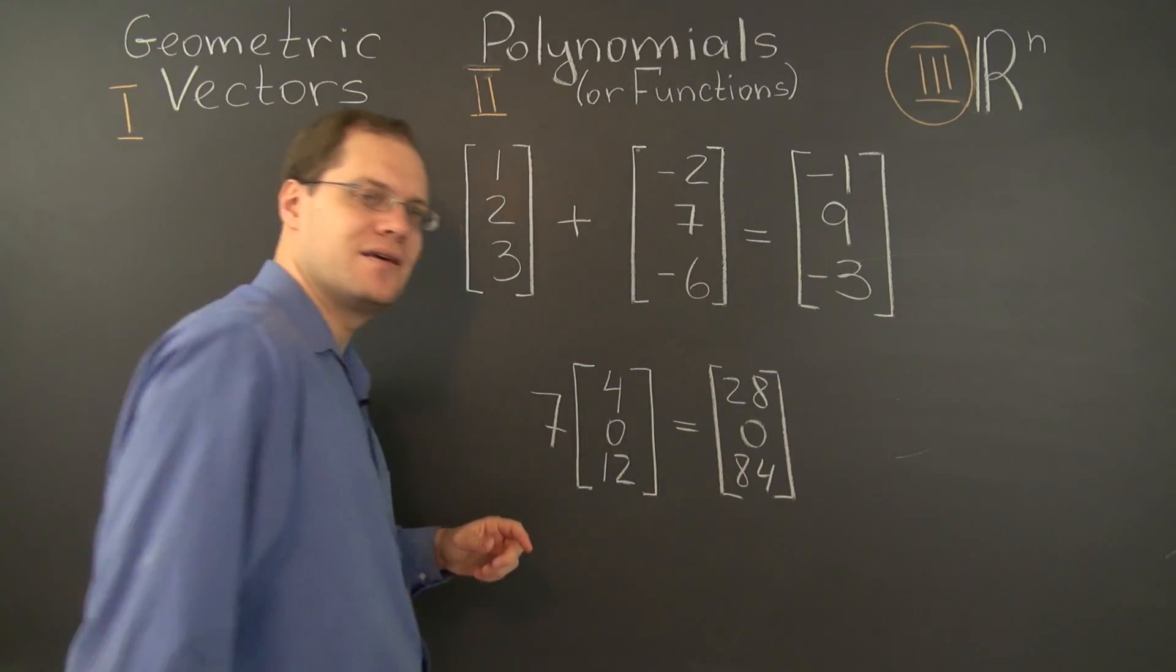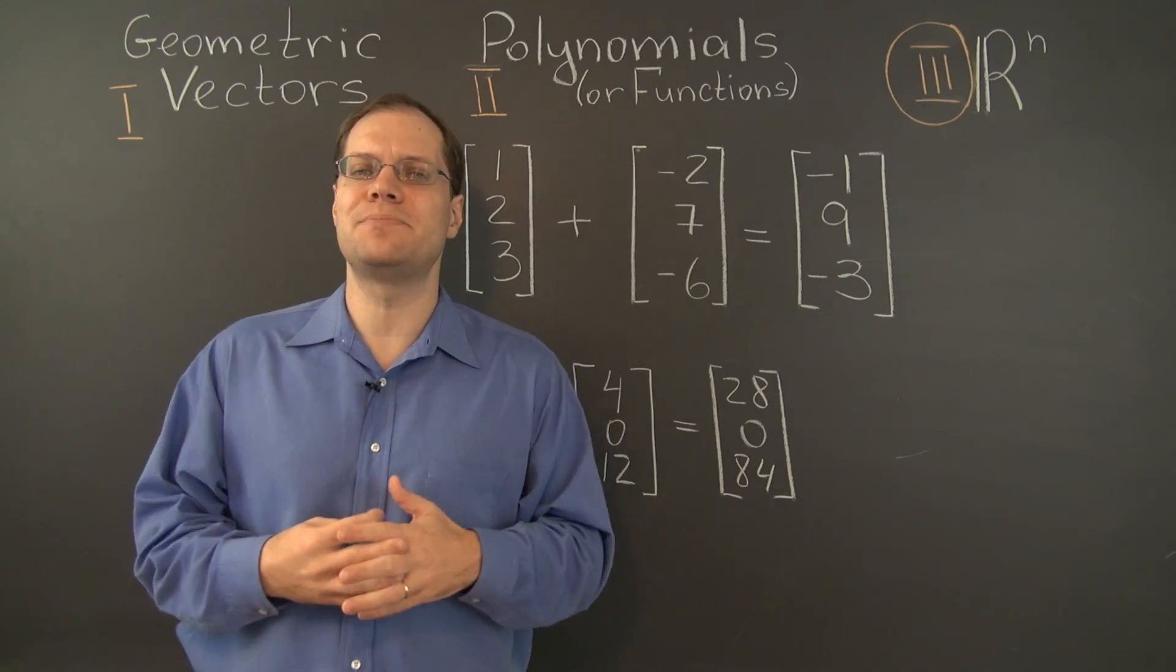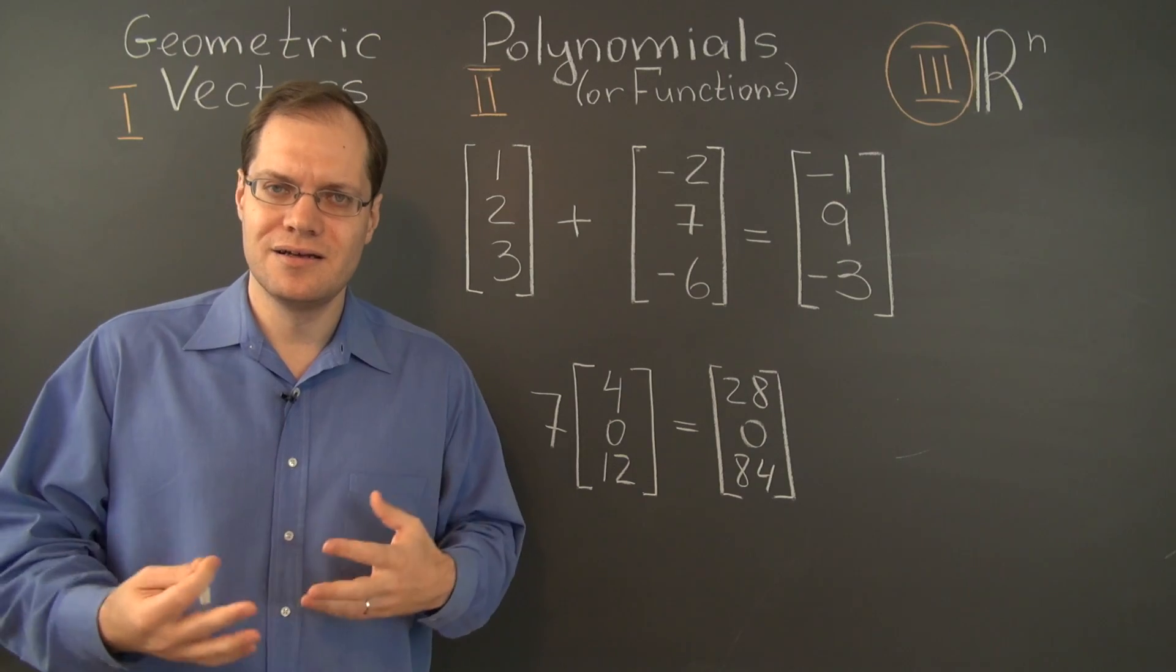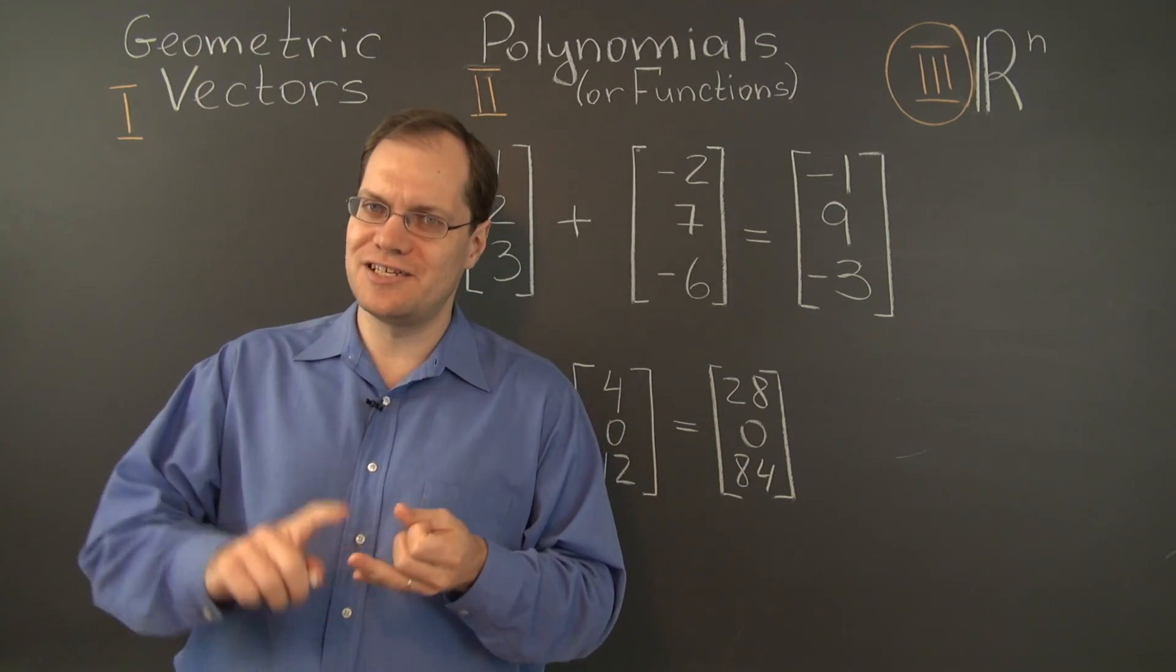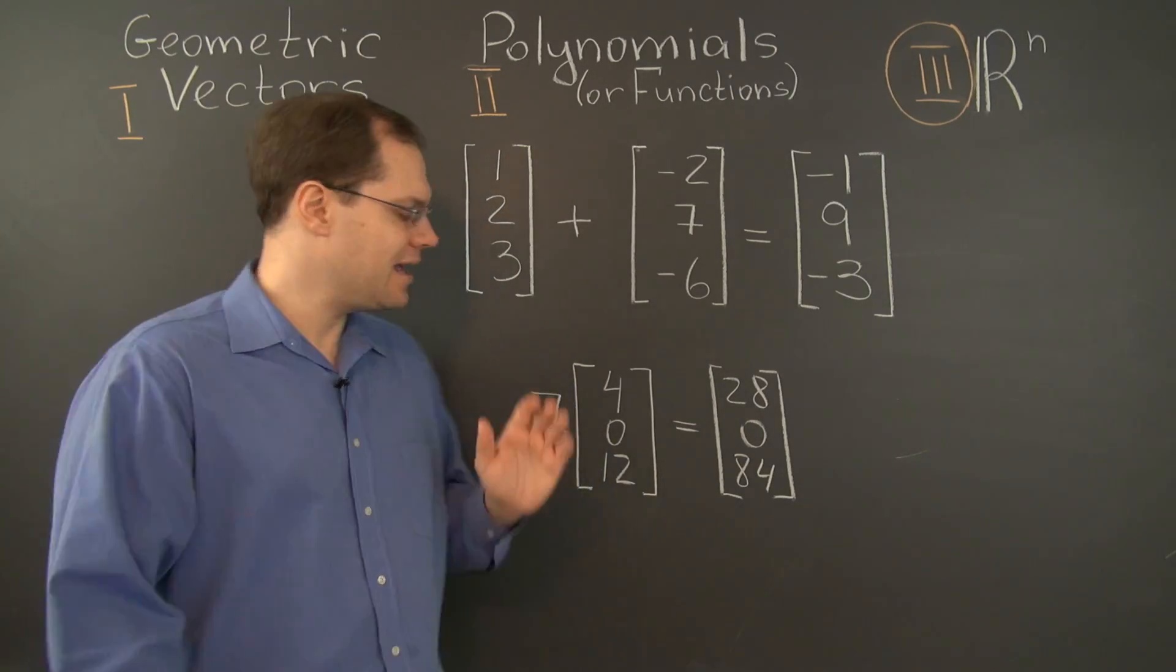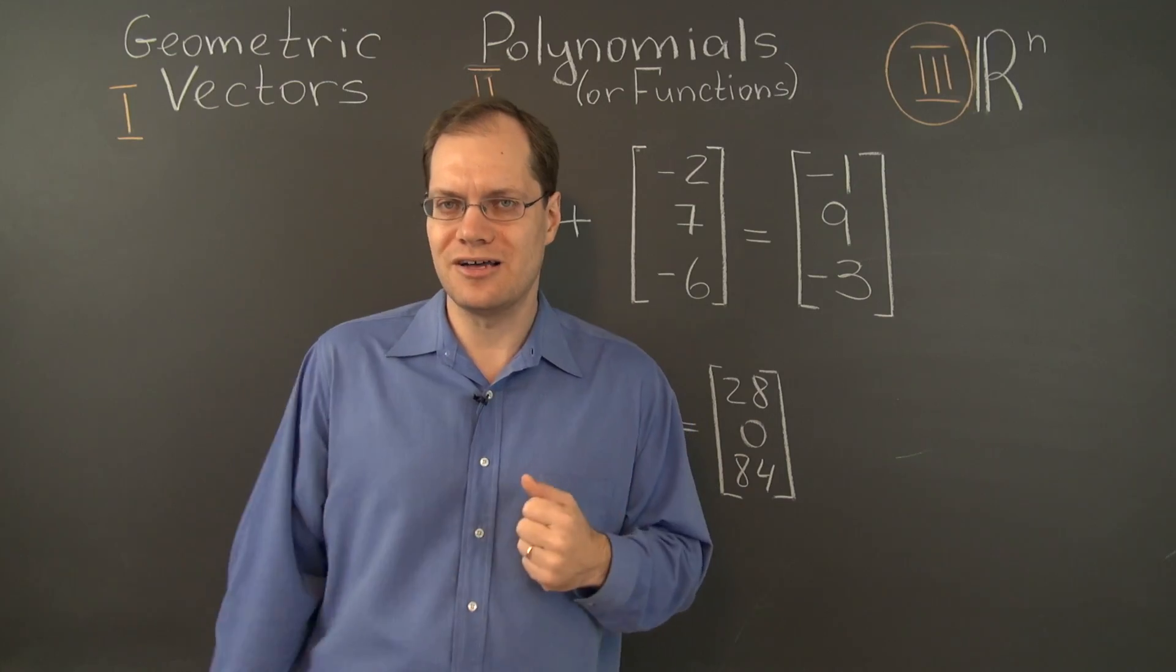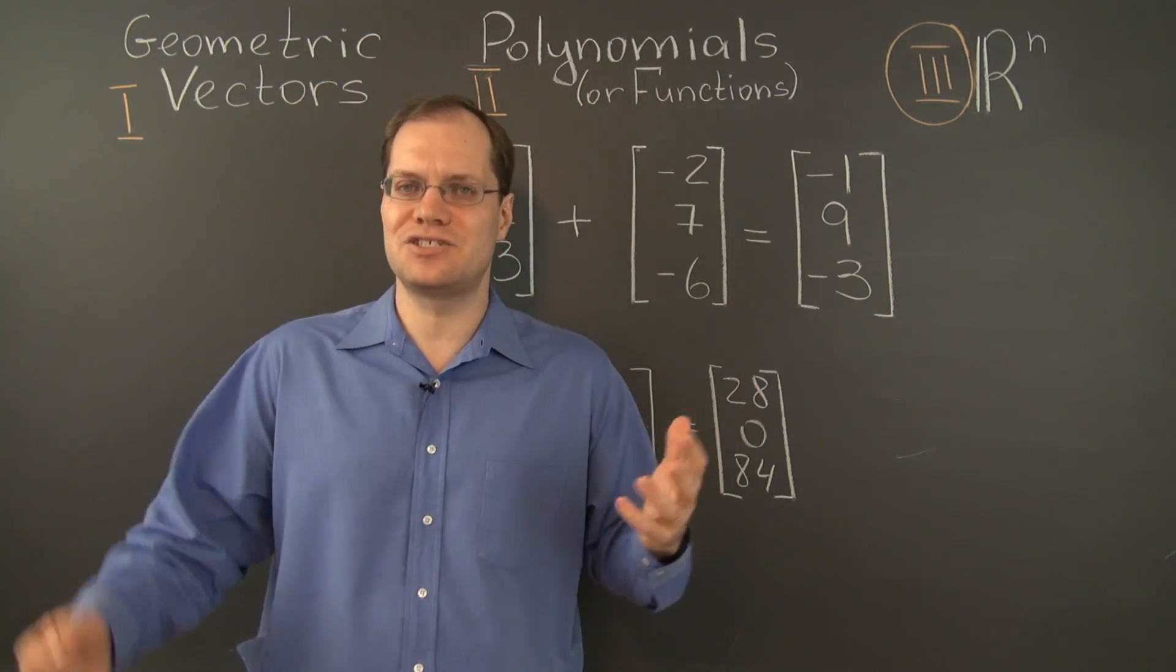That's all there is to it—adding elements of R^n and multiplying them by numbers. Once again, it's abundantly clear that the crucial requirements such as commutativity, associativity, and distributivity are satisfied. So we have bonafide vectors on our hands, and we'll talk about elements of R^n as vectors from now on.